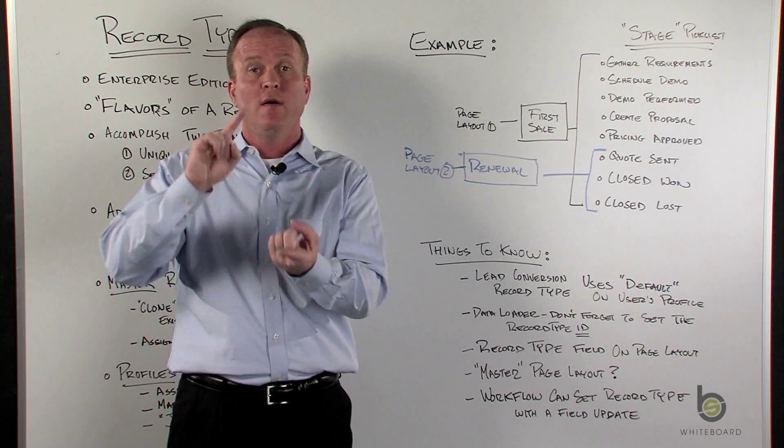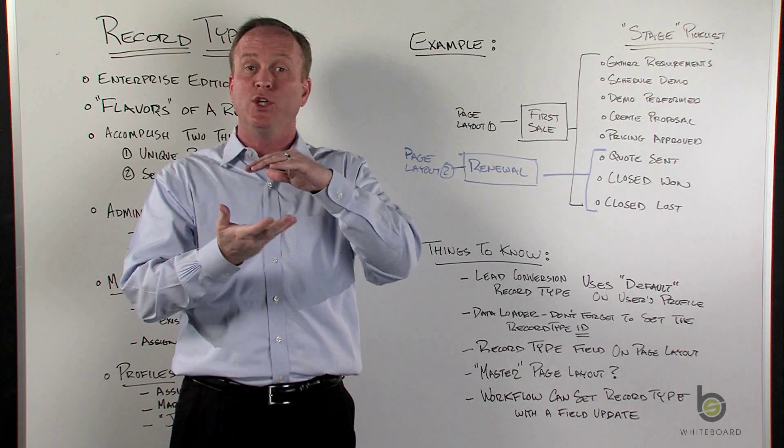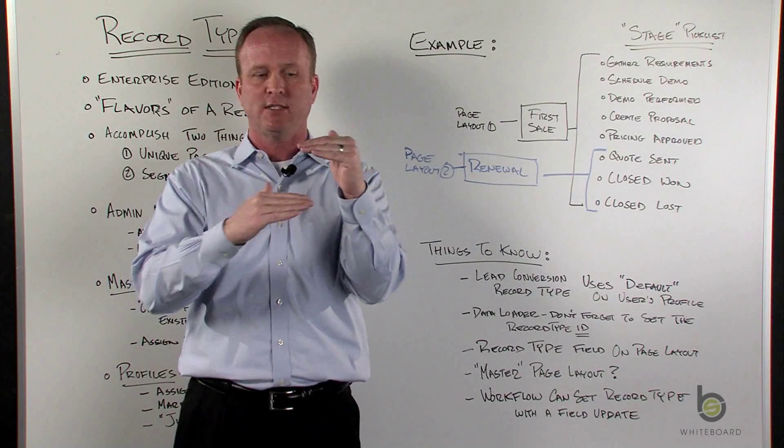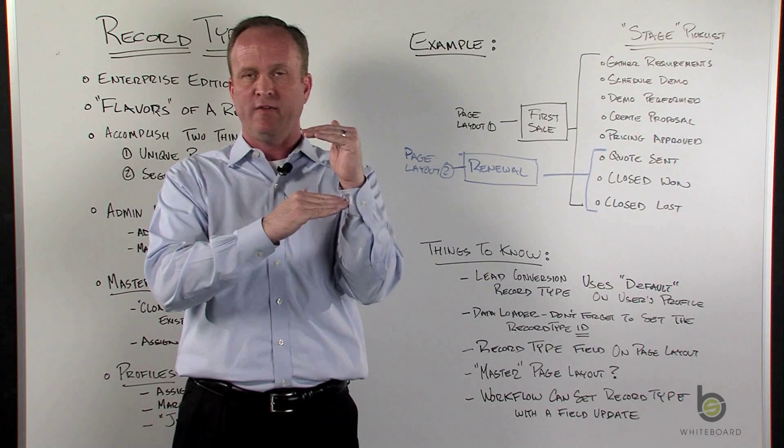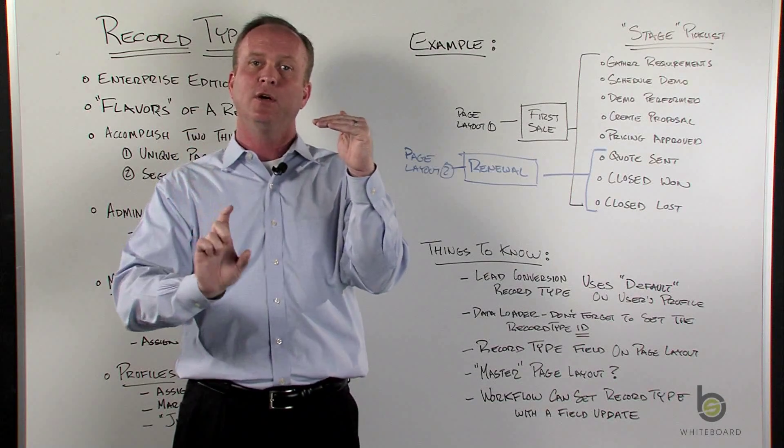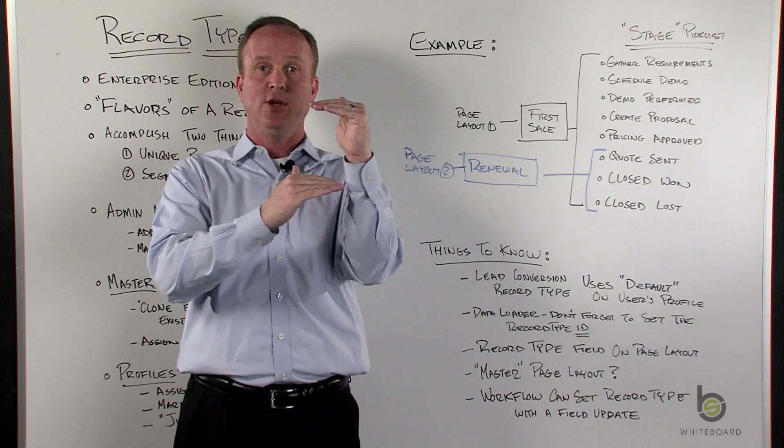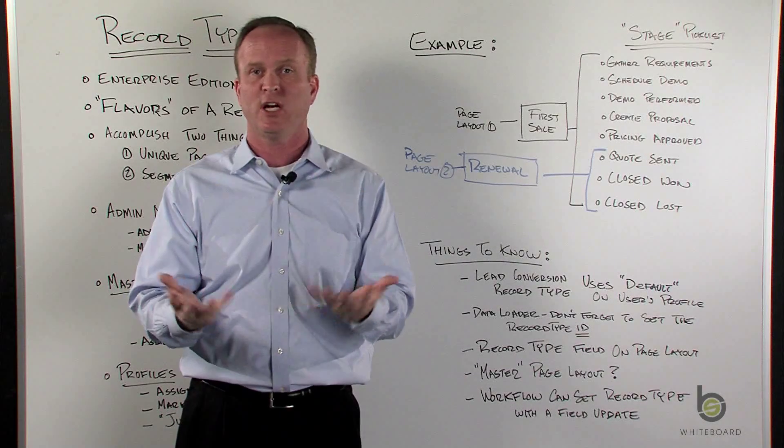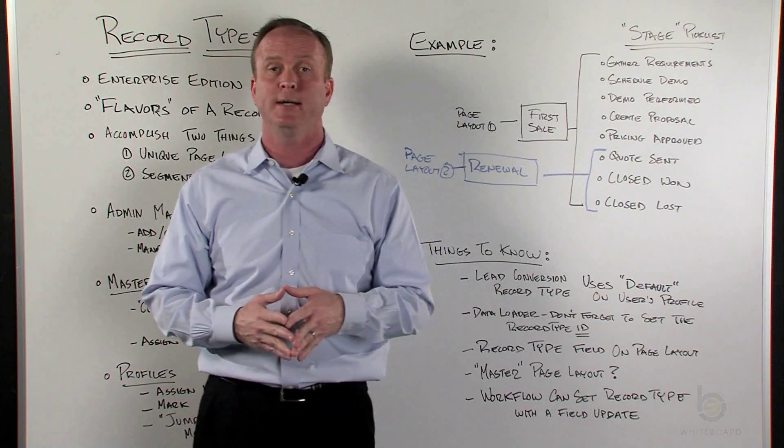Which also flips the page layout. So you could start a sales process that has a page layout with 20 fields, but they get to a certain stage, use workflow to flip the record type, and you could expose more information as you go through the sales process. So just a real life, a little tip, you can use workflow to set the record type.